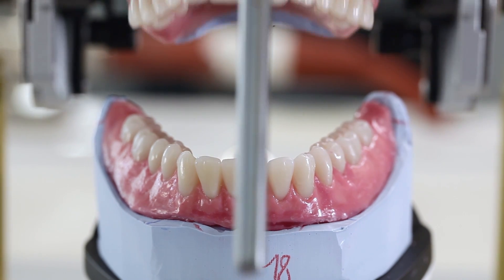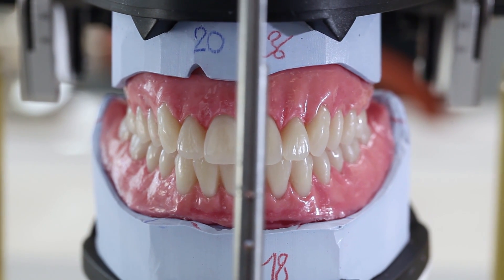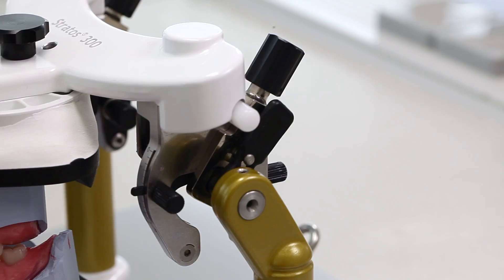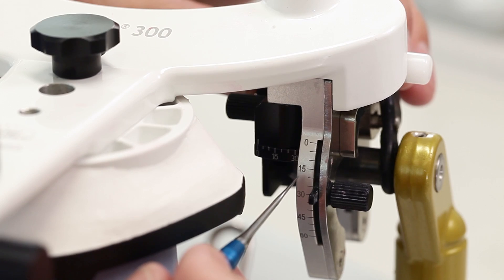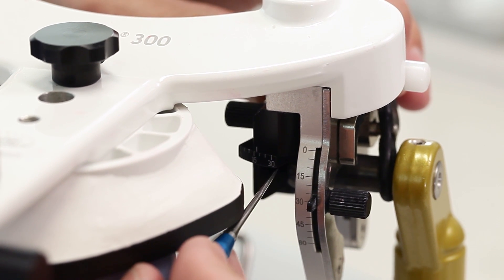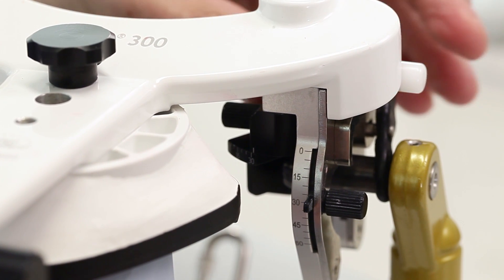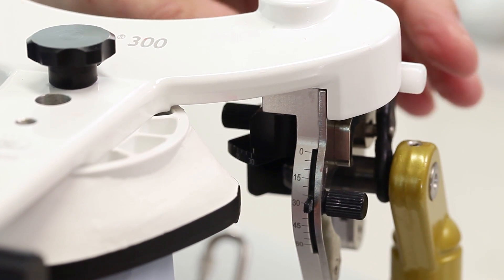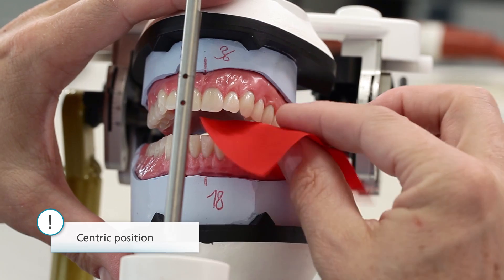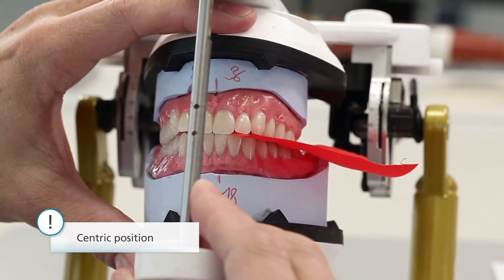As soon as the dentures have been completed in wax, check their occlusal function. Open the centric lock, the bennet angle and the immediate side shift movement in the articulator. The protrusion angle should remain secured at 30 degrees according to average values. Check the occlusal functions starting from the centric position.